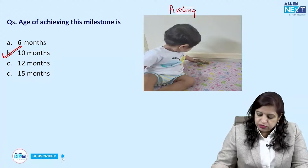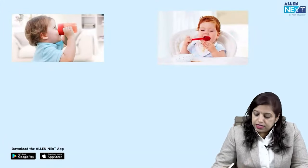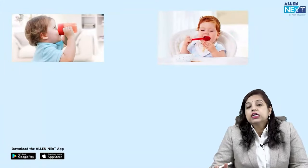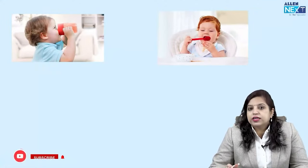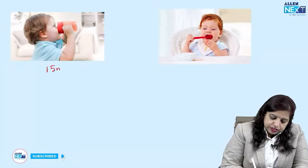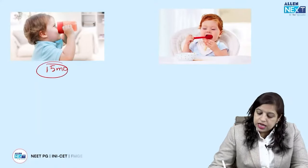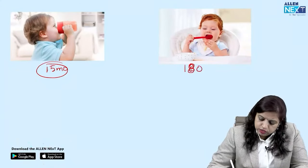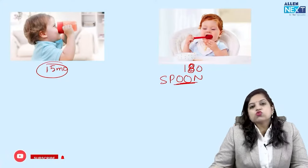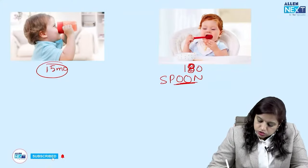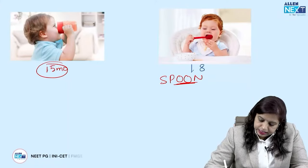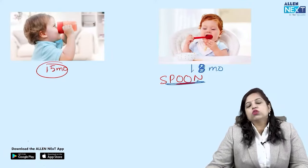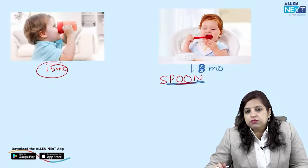At 10 months, the child is also cruising and pivoting. Drinking by a cup comes at 15 months of age. Handling a spoon: remember that spoon has two O's — two 'golas' — and 18 months also has two 'golas', so handling of a spoon comes by 18 months of age.